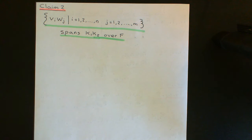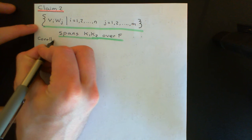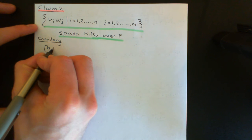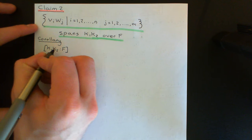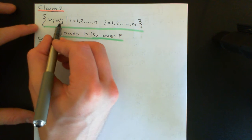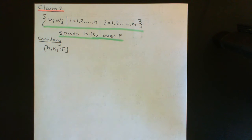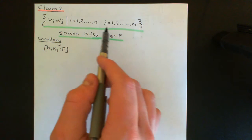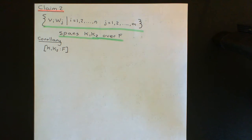There's a nice little corollary of Claim 2. The corollary is that if you consider the degree of the composite of k1 and k2 over F, then it's going to have to be less than or equal to the number of vectors in this spanning set, because any basis of k1k2 over F is going to have to be smaller than or equal to the size of a spanning set. This is just basic linear algebra.